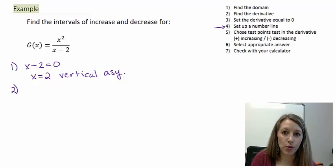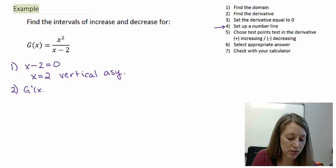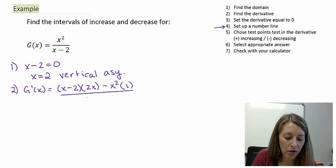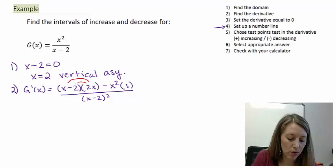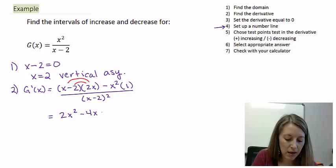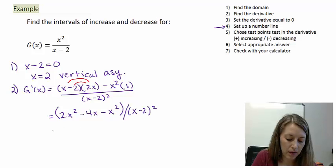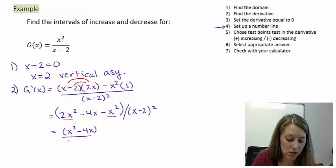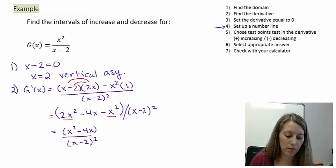Step 2 is to find the derivative. I'm going to find the derivative using the quotient rule, which is the original of the bottom times the derivative of the top, minus the original of the top times the derivative of the bottom, all over the bottom squared. Simplifying by distributing 2x through in the numerator gives me 2x squared minus 4x, then minus x squared, all over the denominator. Combining like terms gives a single x squared minus 4x, all over x minus 2 squared.